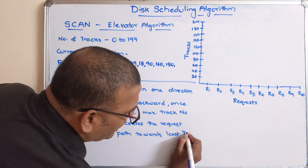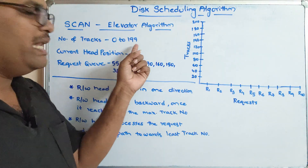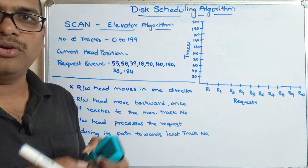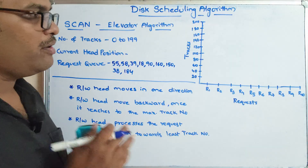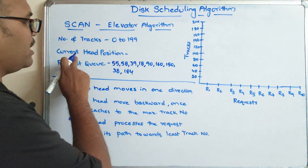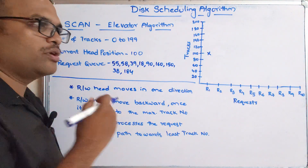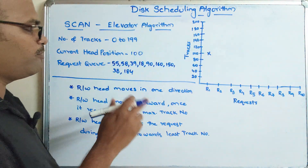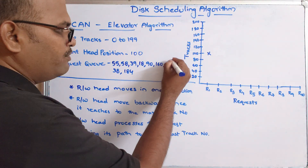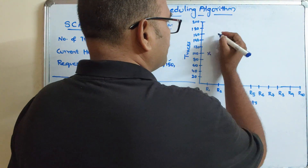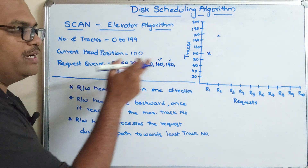Once the read/write head reaches 199 it will start moving backward, toward the least track number. During the backward movement it will again start processing requests along its path. Now let us take this example: the current head position is at 100, so we start with 100 itself. It will start in a forward direction until it reaches the maximum. After 100, the next possible request is 150, so request R2 will be 150, and then 160.